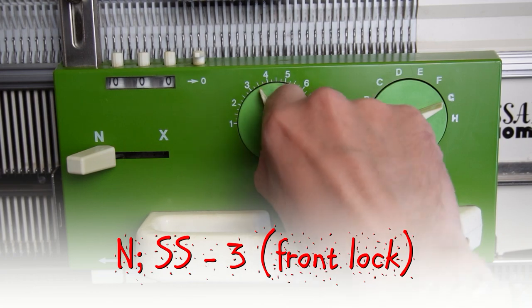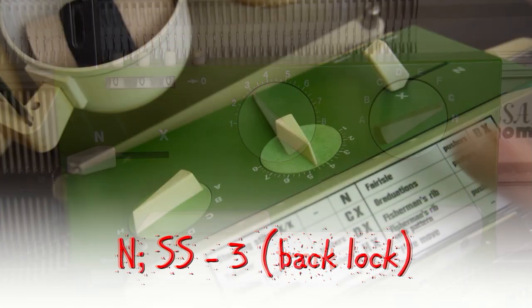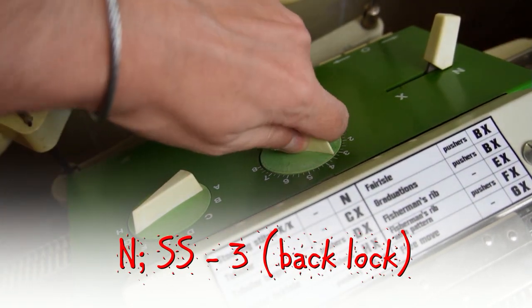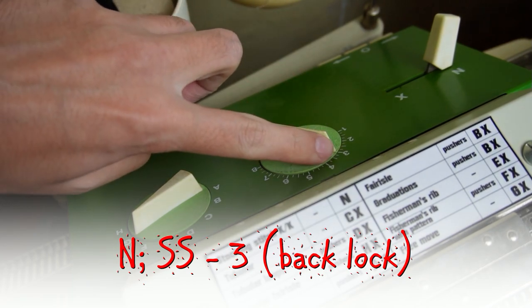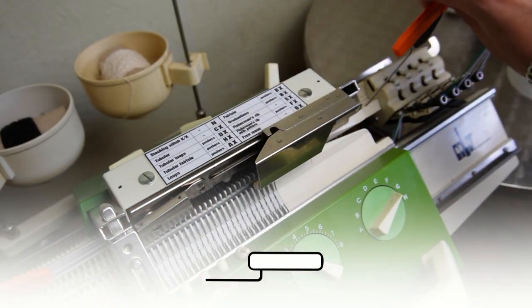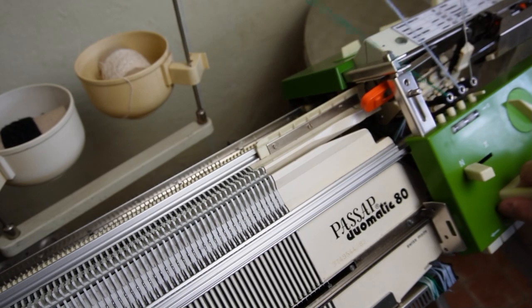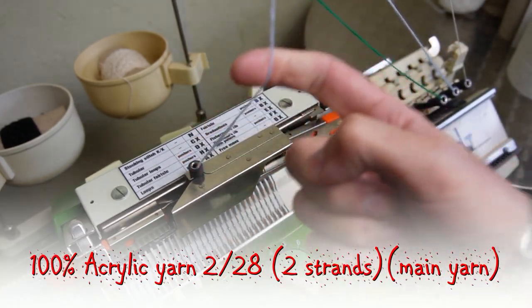Set both locks to N and the stitch size to 3. Insert the orange strippers. Take the main yarn and knit one row.